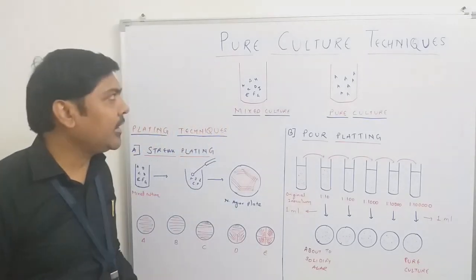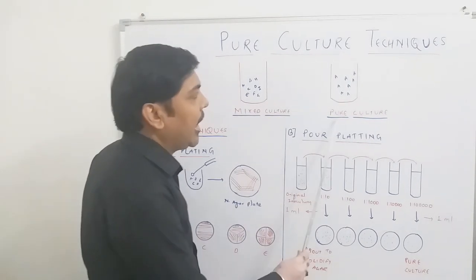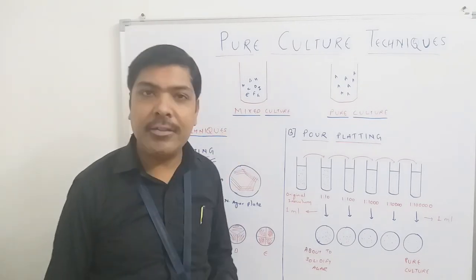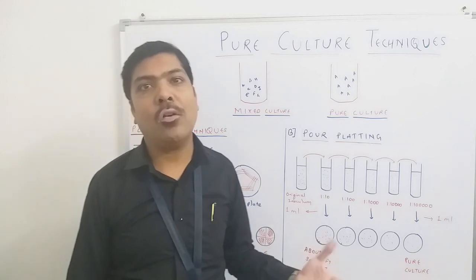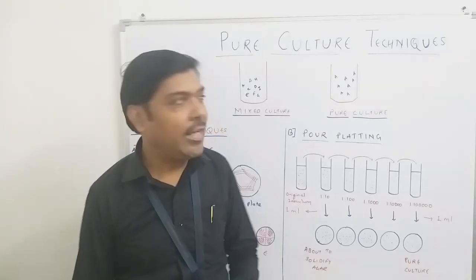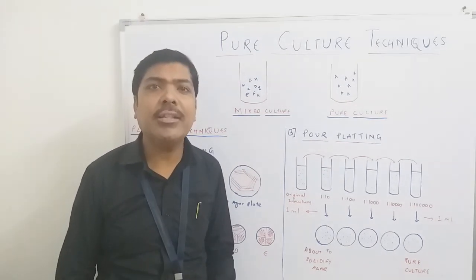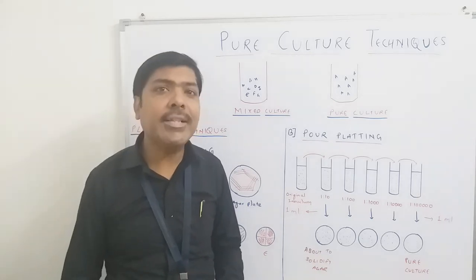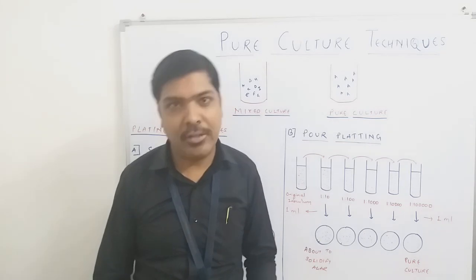As you can see in this diagram, here I have shown one mixed culture and one pure culture. Mixed culture is basically a culture that has many different microorganisms or bacteria belonging to different groups — categories A, B, C, D, E, F, G, H — meaning different categories of bacteria are present. This kind of culture is called a mixed culture.